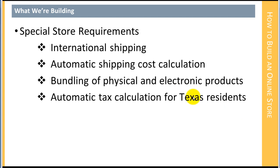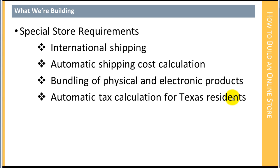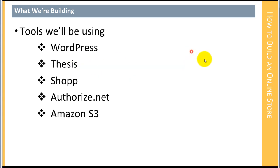The store has some special requirements. We need to be able to do international shipping and automatically calculate shipping costs before the sale is processed. We need to be able to bundle together physical and electronic products in a single purchase. We also need to automatically calculate sales tax for Texas residents while not collecting it for others. These are things that many e-commerce solutions for WordPress have difficulty addressing, which is one of the reasons we ended up selecting Shop.